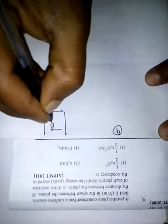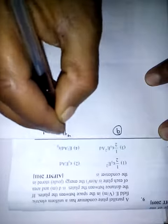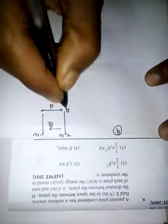Then electric field between this is E. One has a plus charge, minus charge, and area of the plate is A.